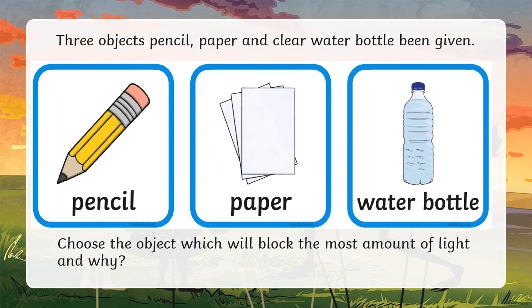The next slide, I have given you pencil, paper, water bottle. And I want you to choose the object which will block the most amount of light and why. Why do you think this object will block the most amount of light? Is it pencil, paper, or water bottle? We know pencil is the correct one. It will be able to block the most amount of light because pencil is an opaque object.